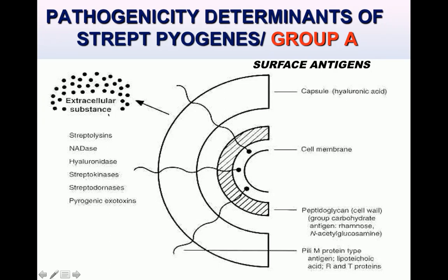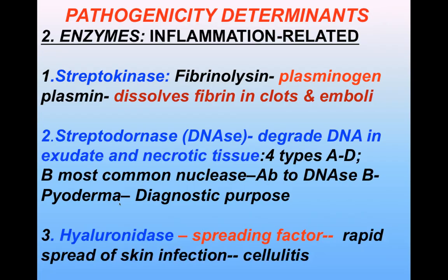A large number of enzymes are produced by Group A streptococci, including streptokinase, streptodornase, hyaluronidase, and DNase. At the same time it produces pyrogenic exotoxins, and all of these are responsible for disease production by Strep pyogenes.